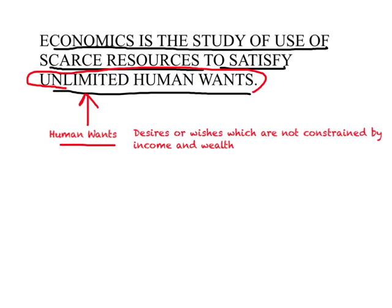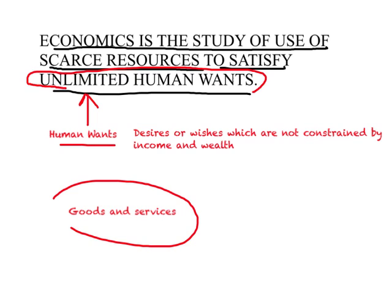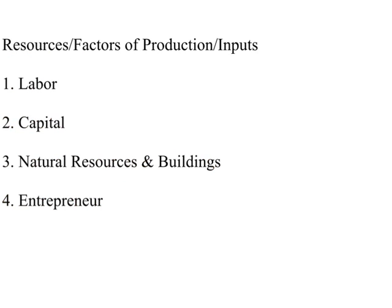The next part of the definition is 'the use of scarce resources.' Resources are simply factors of production or inputs that we require in order to produce goods and services. A good is something tangible — you can touch and feel it — for example, tables, cars, clothing, and so on. Services are intangibles, like the services of a teacher, a hair cutter, or an insurance agent. Human wants are about goods and services, and we need inputs or factors of production or resources to produce them.